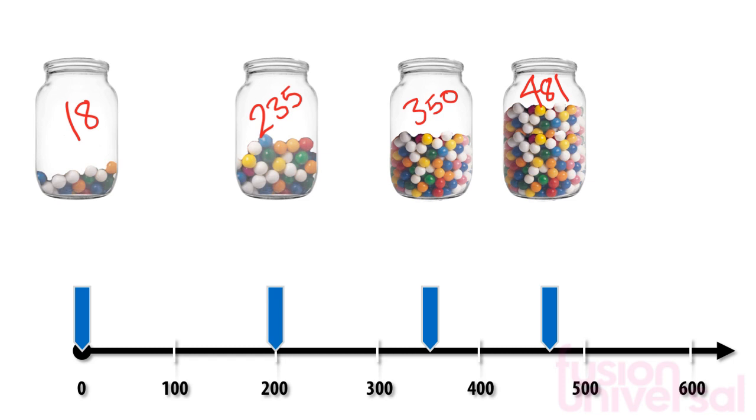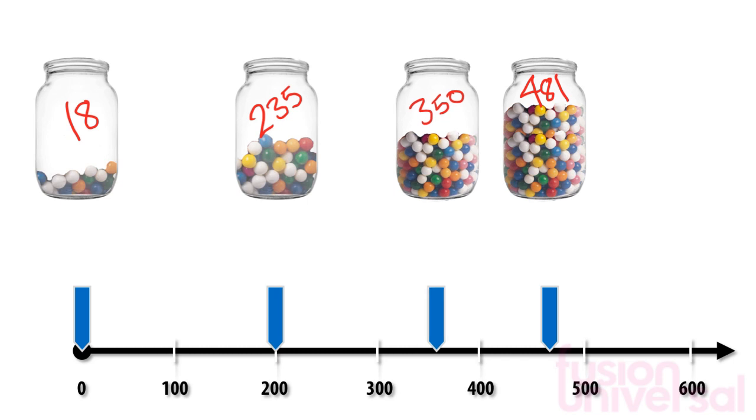350 is exactly halfway between 300 and 400. This is a special case. When it is exactly halfway between, we always round up. So this becomes 400.